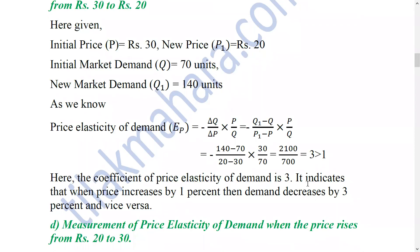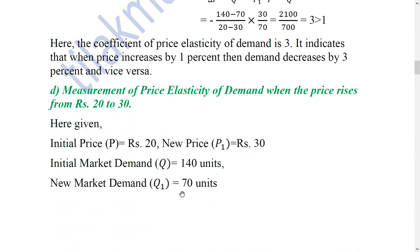Price elasticity of demand is 3, which is greater than 1. This means demand is elastic. The interpretation: when price increases by 1%, demand decreases by 3%, and vice versa. For question D, measurement of price elasticity of demand when price rises from 20 to 30 is the reverse calculation.